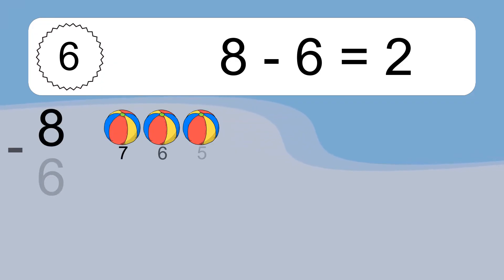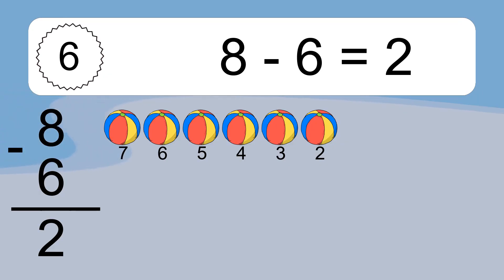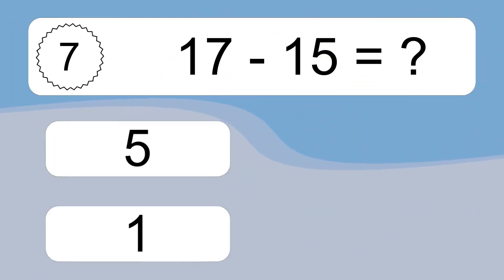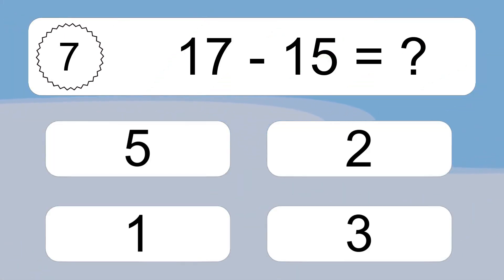8 minus 6 equals what? 8 minus 6 equals 2. Let's count it: 7, 6, 5, 4, 3, 2.